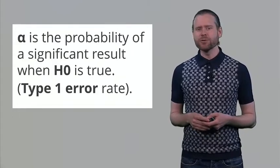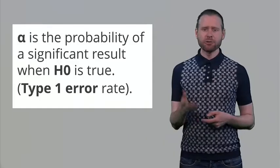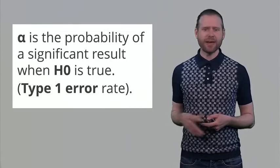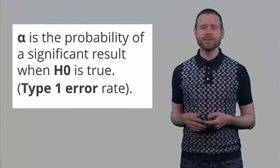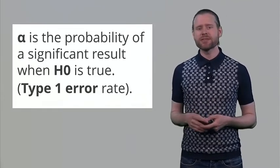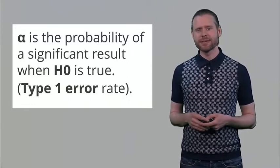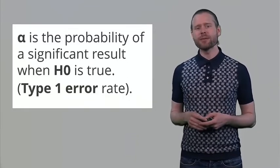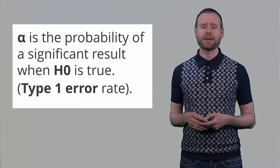The alpha that we use is the probability of a significant result when the null hypothesis is true. This is the definition of a type 1 error rate. You are free to set this alpha at any level that you want. A very often used level in psychology is 5%. But we already saw that in some fields like physics it is very common to set a much lower type 1 error rate. And you can also think about areas such as medicine, where it might be useful to set a much lower error rate as well.